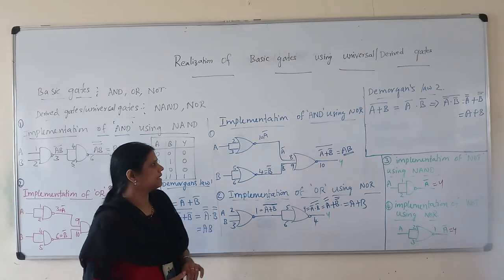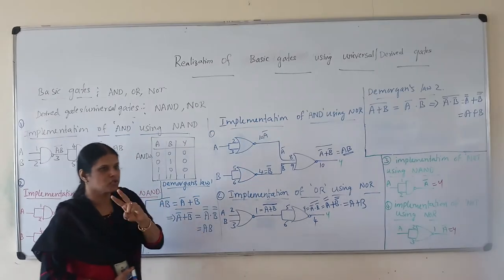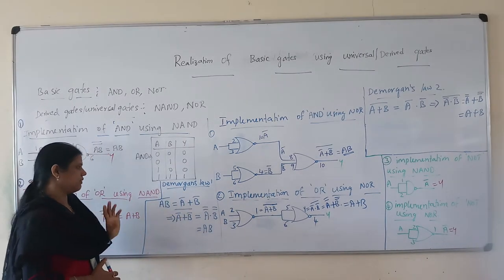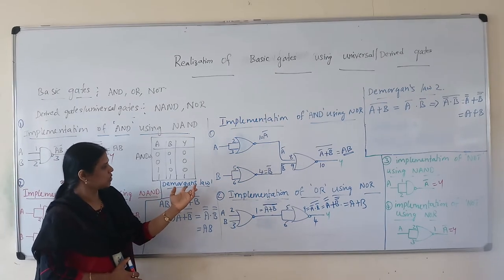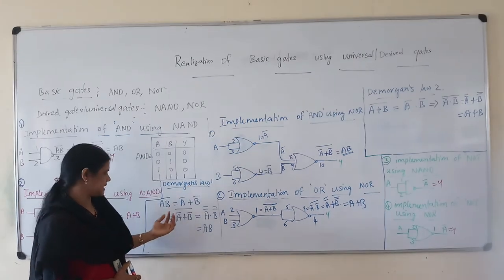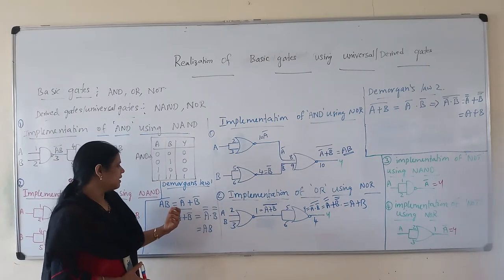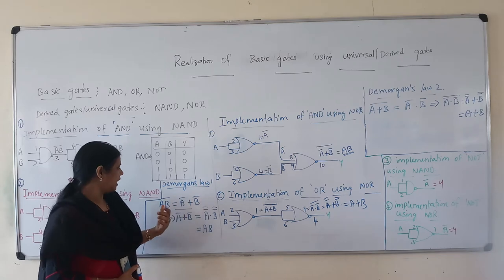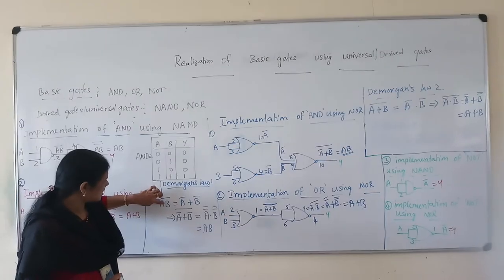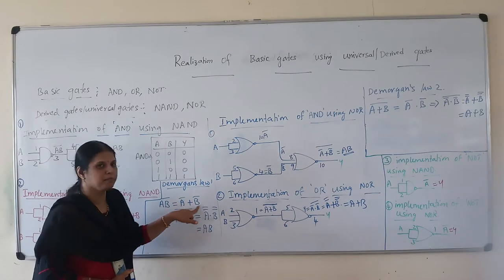Before discussing the derivation of basic gates using the universal gates, let me discuss two De Morgan's laws used to implement this derivation. The first De Morgan's law says that if you do the complement of the product — say AB bar — then it produces A bar, and implicitly using the dot or product operation, this product will become the sum. Therefore this expression becomes A bar plus B bar.